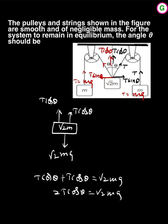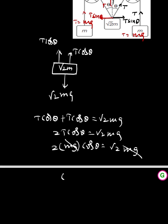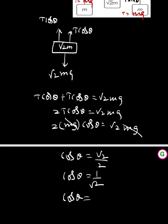So 2T cosine theta equals root 2 mg, and since T equals mg, cosine theta equals root 2 mg over 2mg. The mg terms cancel, giving cosine theta equals root 2 by 2, which is 1 by root 2. Therefore cosine theta equals cosine 45 degrees, so theta equals 45 degrees.